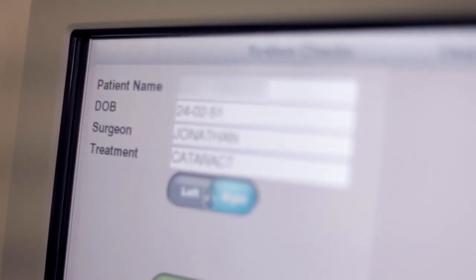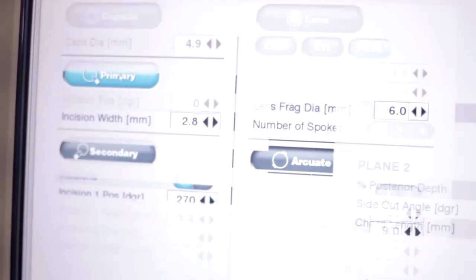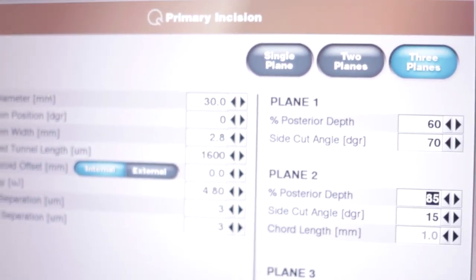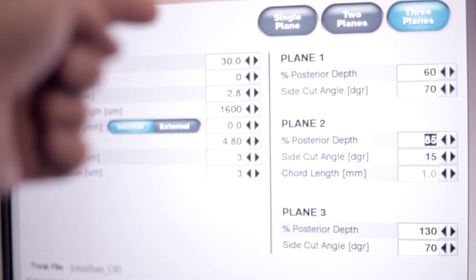Femtosecond laser parameters do not involve only energy, spot separation or line separation. The plane configuration of the femtosecond laser device also involves size, arc diameter and, in our opinion, what is most important, depth.